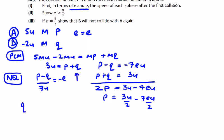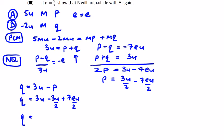From this equation, q is equal to 3u minus p. That's going to be 3u minus 3u over 2 plus 7eu over 2. So q becomes 3u over 2 plus 7eu over 2. Factoring out the u's: p equals u over 2 times (3 minus 7e), and q equals u over 2 times (3 plus 7e).